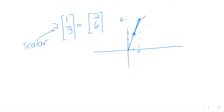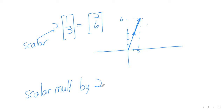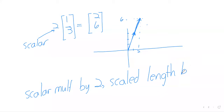Phrasing that a little more formally: scalar multiplication by two scaled the length by a factor of two. That's where the word 'scalar' comes from — scalar multiplication keeps the direction of the vector constant but scales its length out or in.